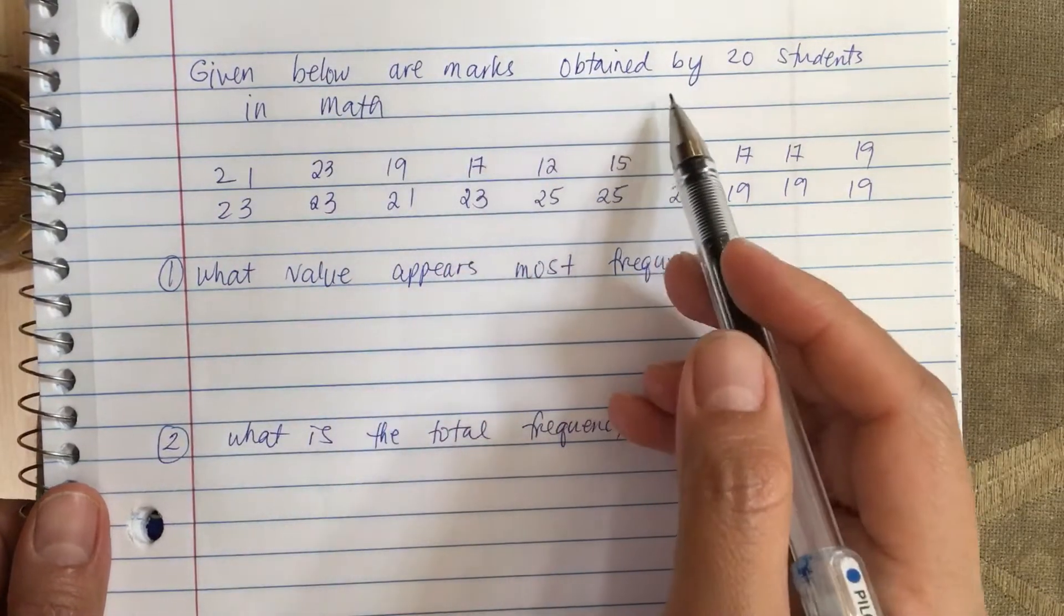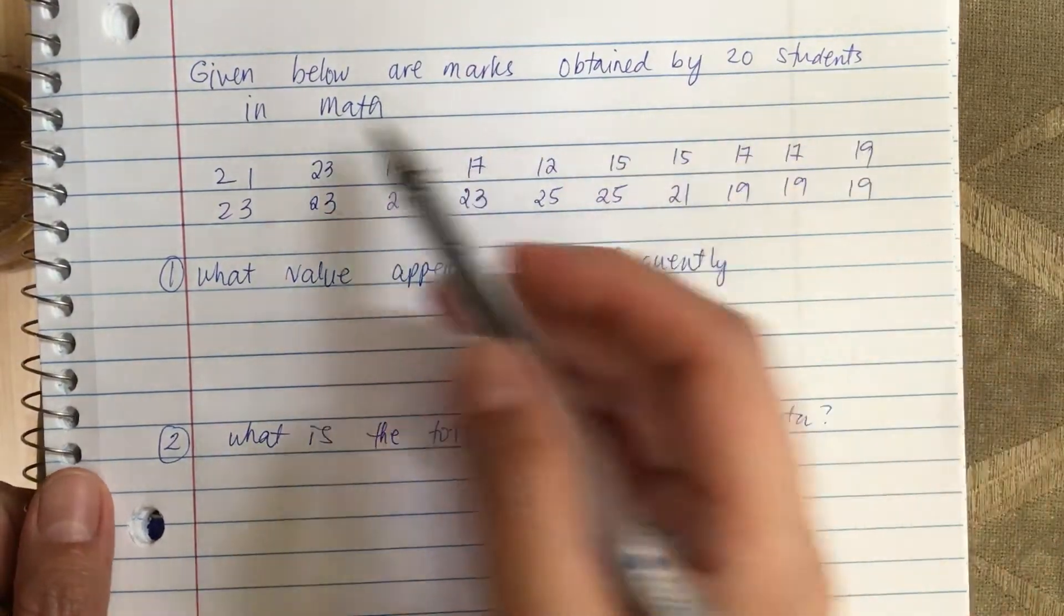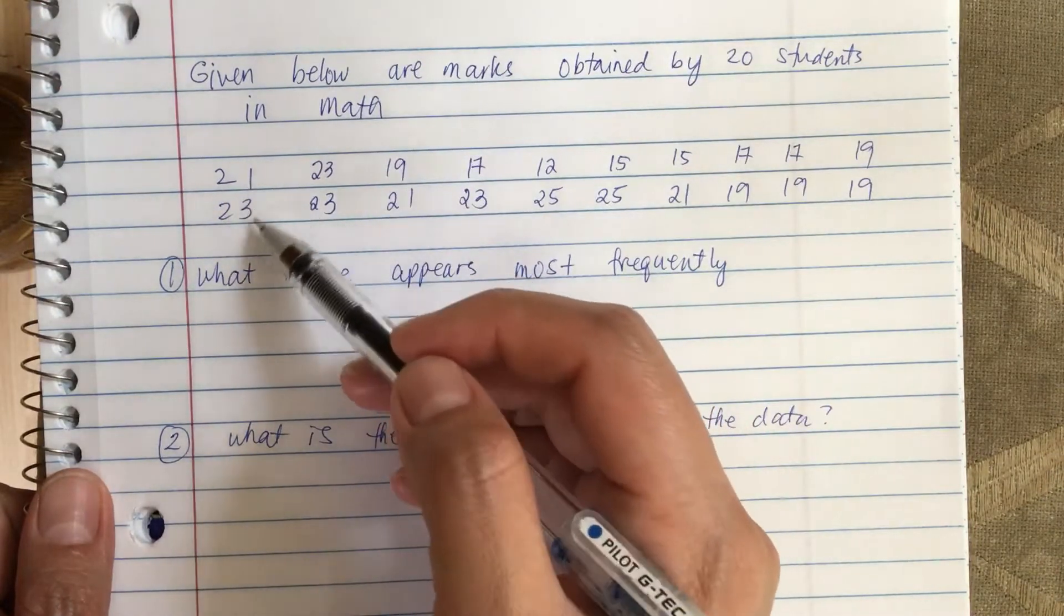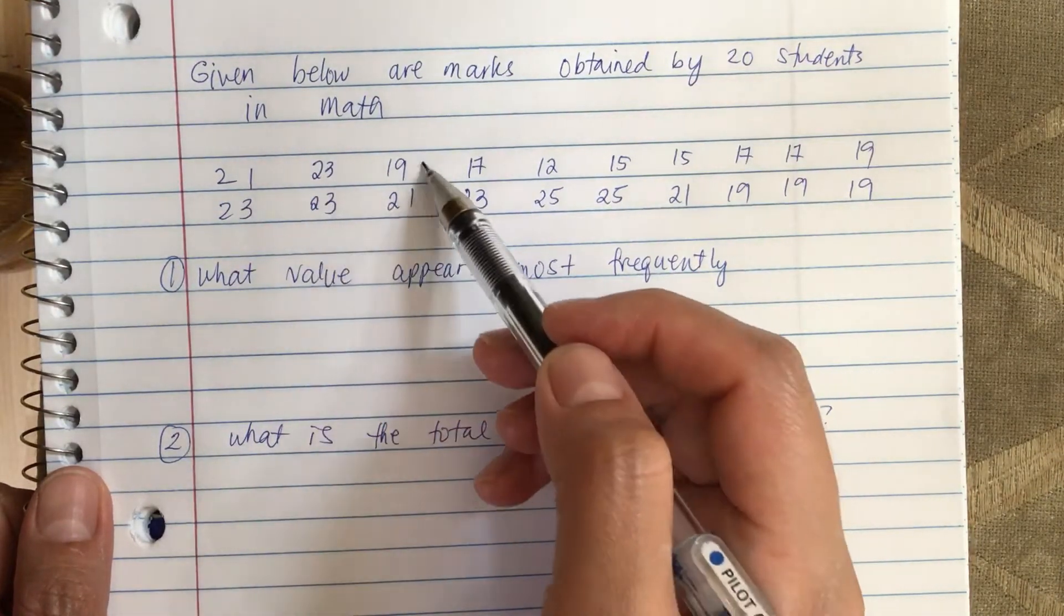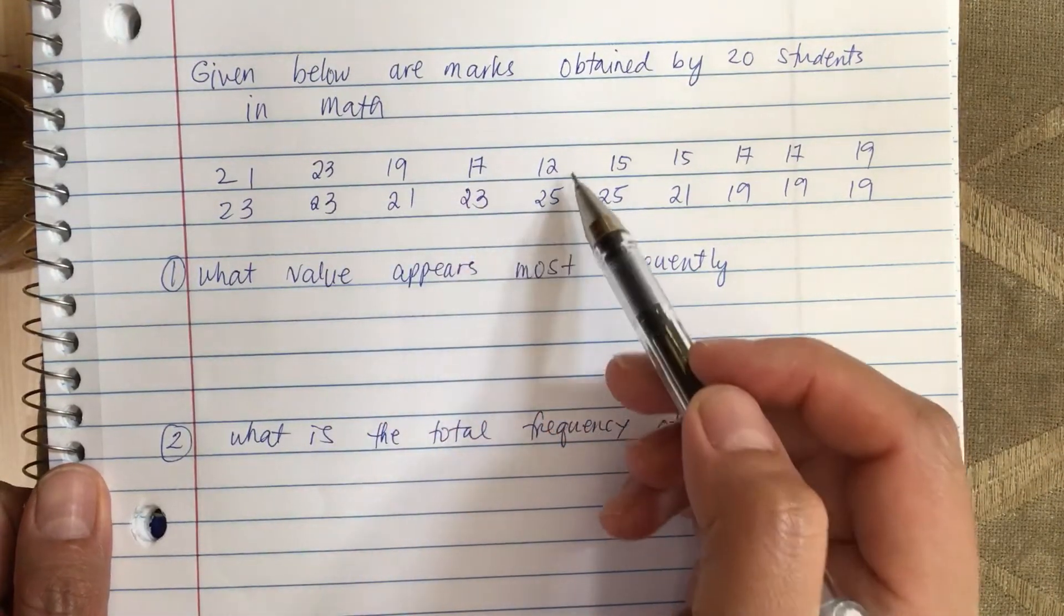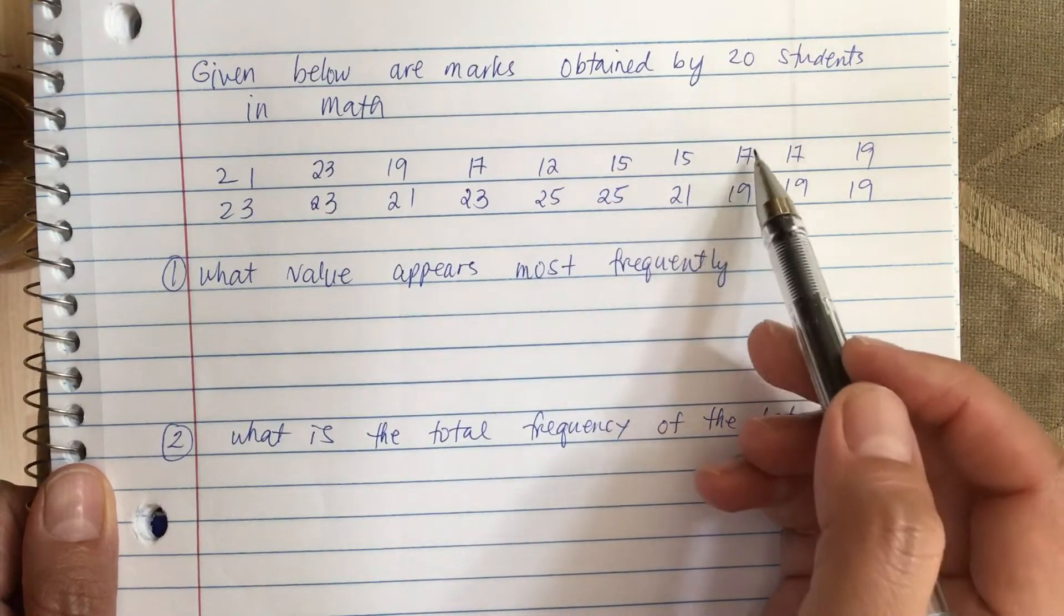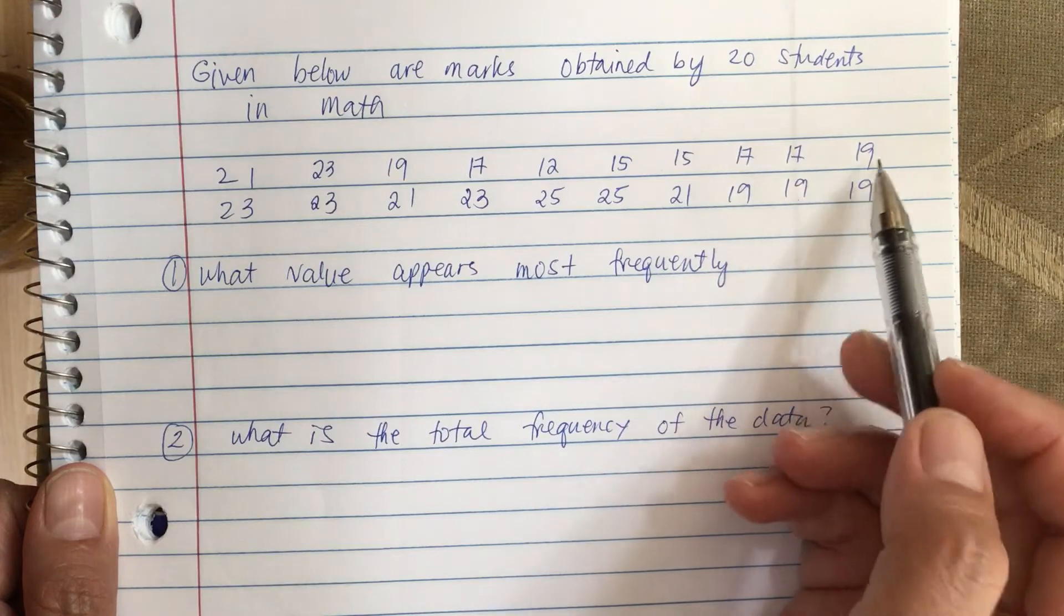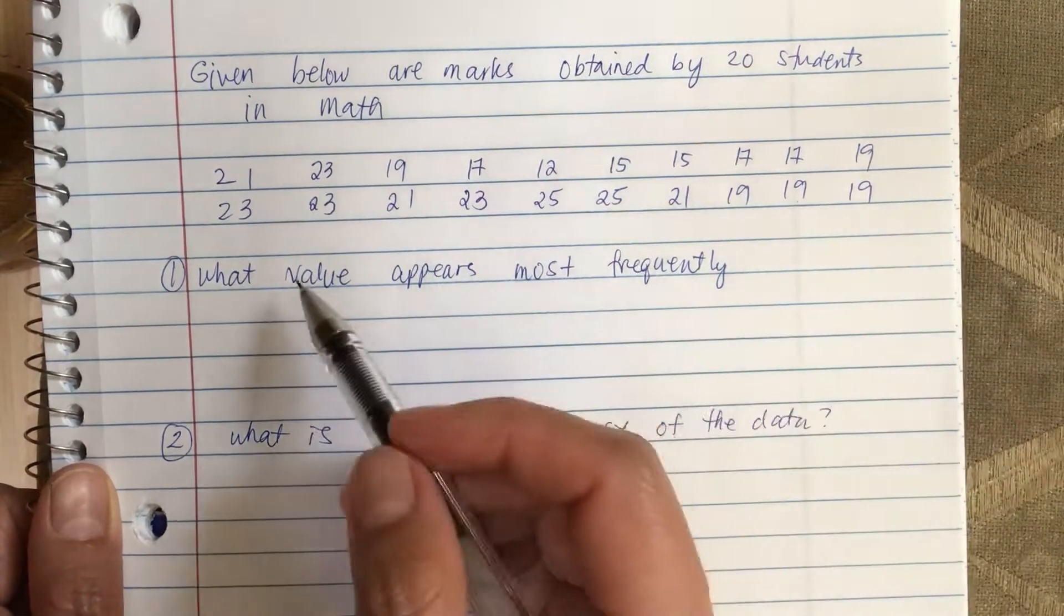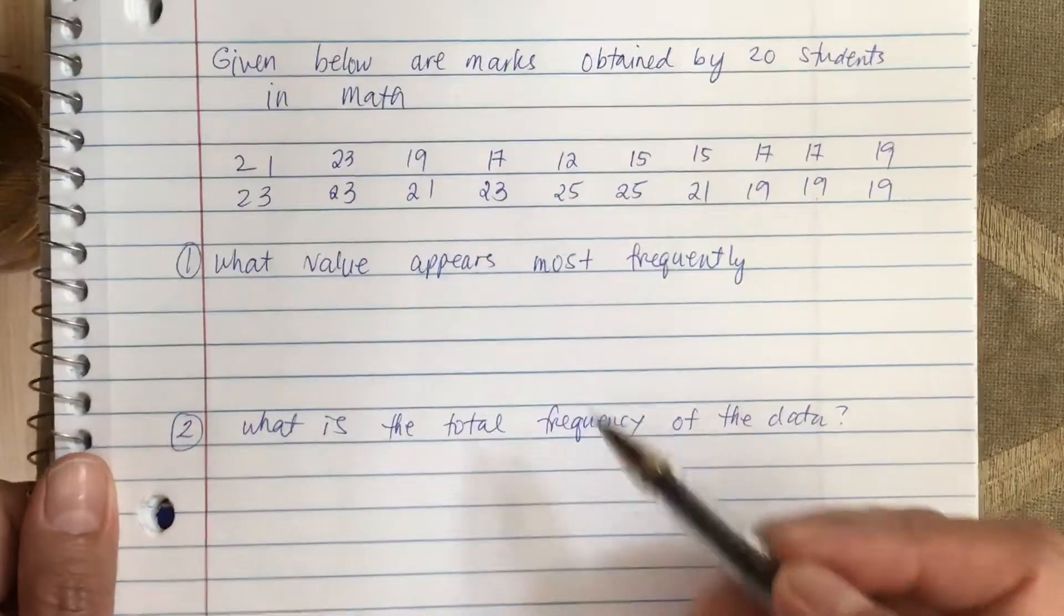Given below are marks obtained by 20 students in math. So we have 21, 23, 23, 23, 19, 21, 17, 23, 12, 25, 15, 25, 15, 21, 17, 19, 17, 19, and 19. These are the values.